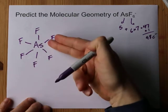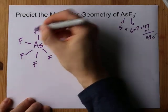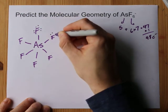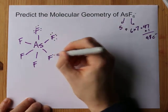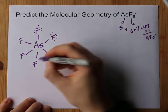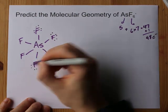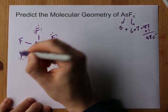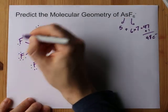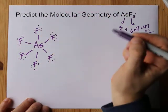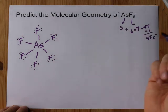Let's complete the octet on the outer atoms. 14, 16, 18, 20, 22, 24, 26, 28, 30, 32, 34, 36, 38, 40, 42, 44, 46, 48. Oh, that's it. I am out of electrons.